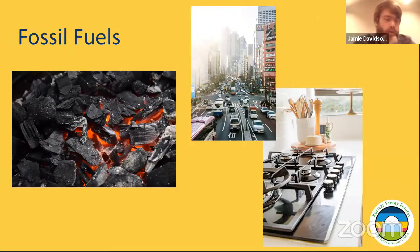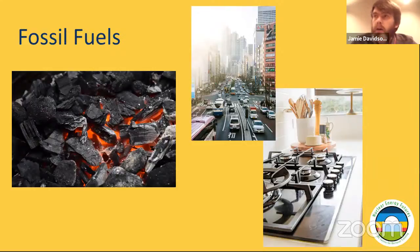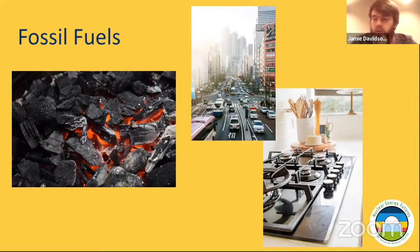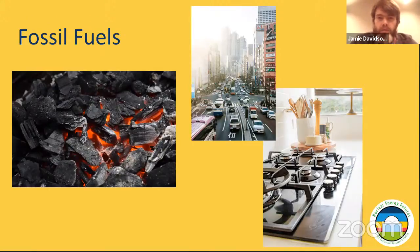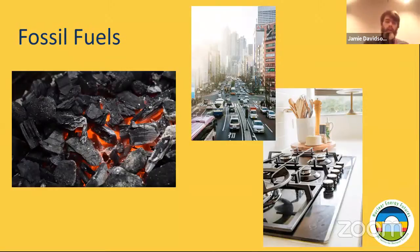Fossil fuels come from deep within the earth. They are the petrified remains of dinosaurs and all sorts of other animals and plants from long ago. Companies then extract those oils, gases and coal, and they burn them. Much like a barbecue, you burn the oil, the gas or the coal, which heats up water and turns a turbine.